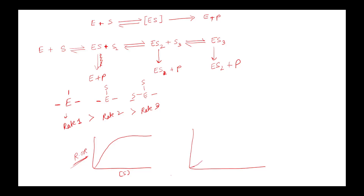Because of this increased affinity, the binding becomes faster and the maximum velocity is achieved more rapidly. This produces what is called a cooperativity graph — a sigmoid-shaped curve showing faster binding and faster achievement of maximum velocity.